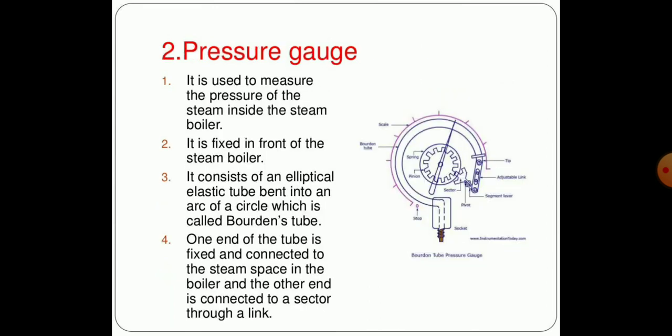The second very important mounting is the pressure gauge. It is used to measure the pressure of steam inside the steam boiler and is fixed in the front of the steam boiler. It consists of an elliptical elastic tube bent into the arc of a circle which is called a Bourdon tube. One end of the tube is fixed and connected to the steam space in the boiler, and the other end is connected to a sector through a link.